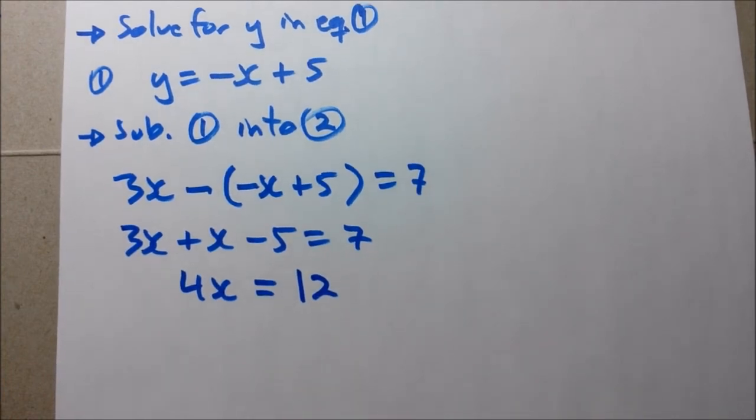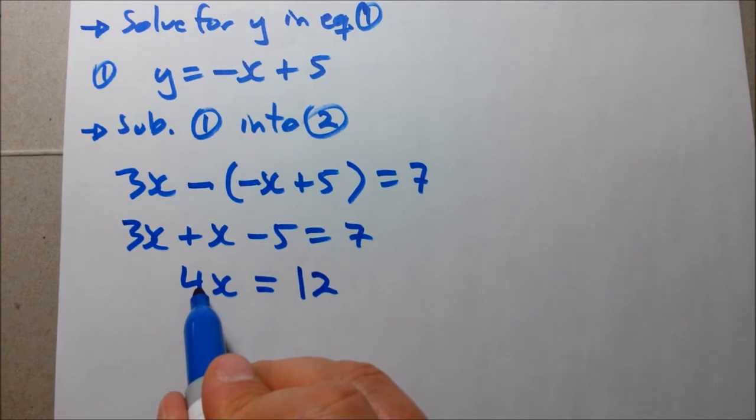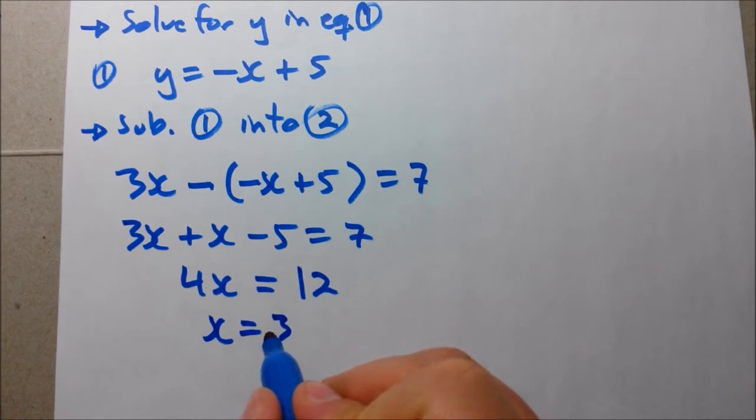Now we need to solve for x. So 4 is multiplying here. It'll go dividing on the other side. So 12 divided by 4, that gives us 3. So now we have our x coordinate.